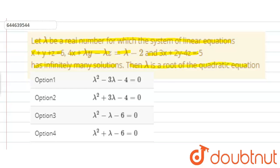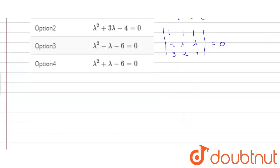Since the system has infinitely many solutions, the determinant is equal to 0. Writing the coefficient matrix in determinant form: 1, 1, 1; 4, lambda, minus lambda; 3, 2, minus 4 equals 0. Expanding this, we get 1(minus 4 lambda plus 2 lambda) minus 1(minus 16 plus 3 lambda) plus 1(8 minus 3 lambda) equals 0.